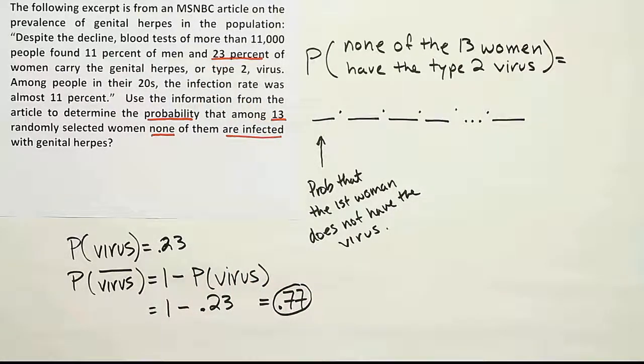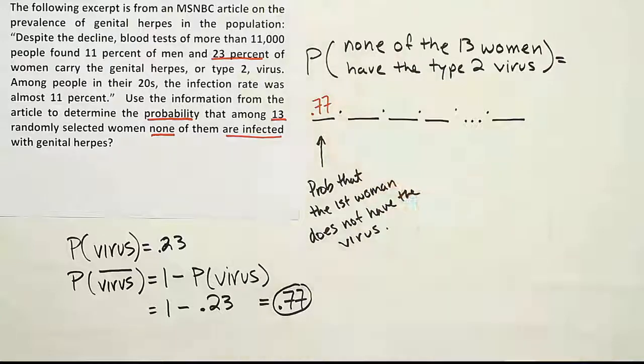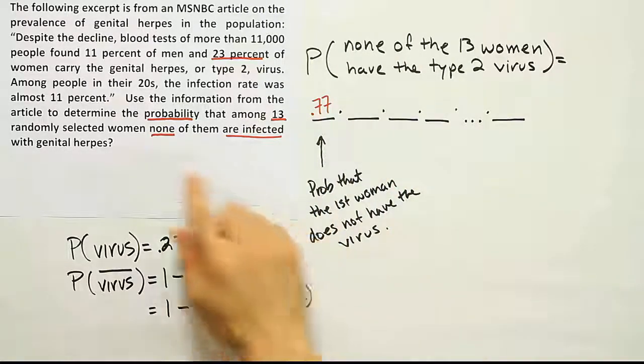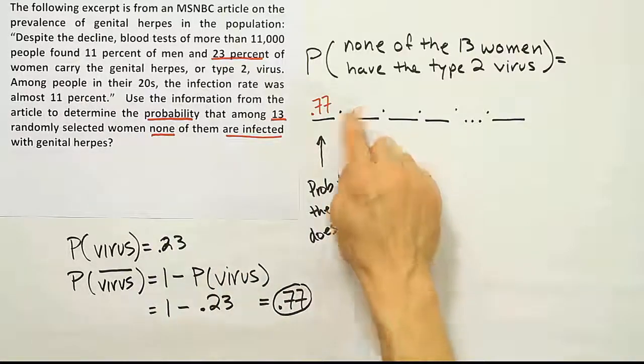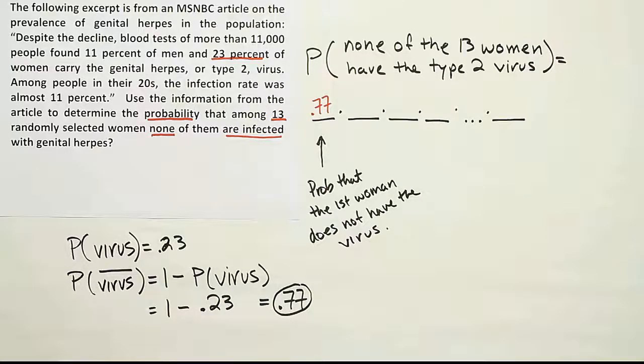So 77% of women do not have the virus. That makes sense, right? 23% have it, 77% do not have it. So the probability that that first woman I select doesn't have the virus is 77%. Now I want them all to be the same. I want all the women not to have the virus, so that means I want the next woman not to have the virus, the next one not to have it, the next one not to have it.